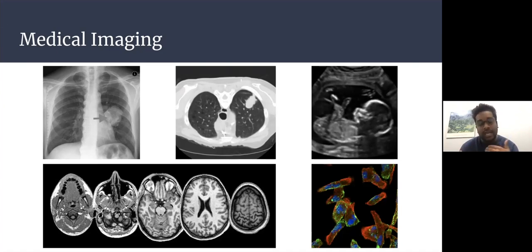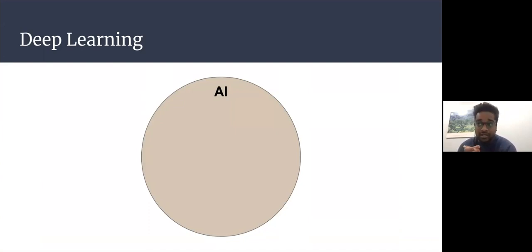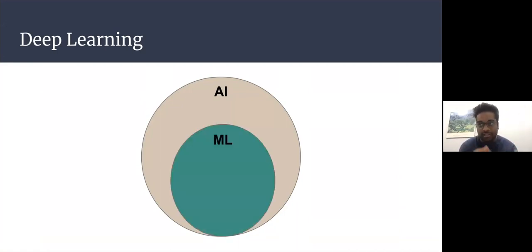Being able to learn how to detect certain diseases from these images can hopefully help clinicians by facilitating their job and finding anomalies. This is where deep learning comes in. AI, at least the kind we're talking about, is an umbrella term for a program that is trained to solve a certain task really well.